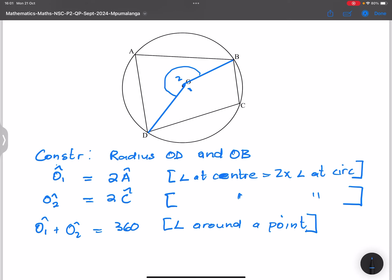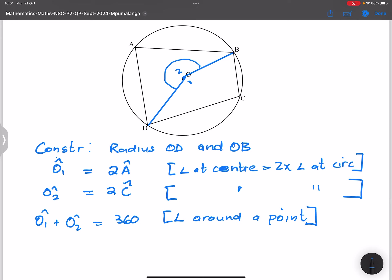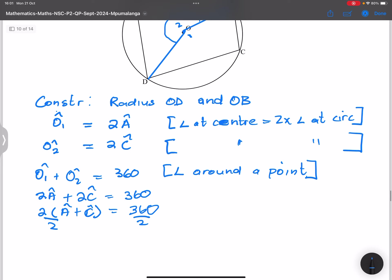So that means if O1 plus O2 is equal to 360, then it means that 2 times angle A plus 2 times angle C will also be equal to 360. And so if we take that out and say 2(A + C) = 360, then we can divide by 2 on either side, such that we've got A plus C equal to 180. And that is proven.